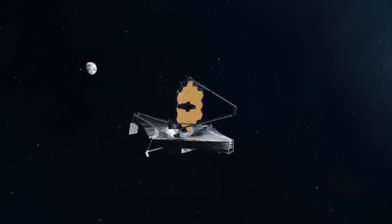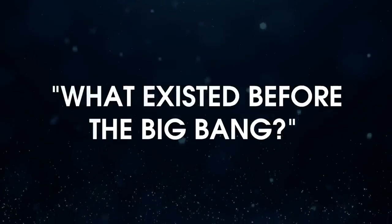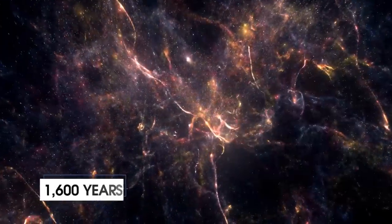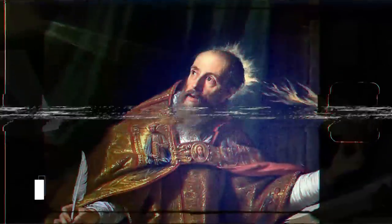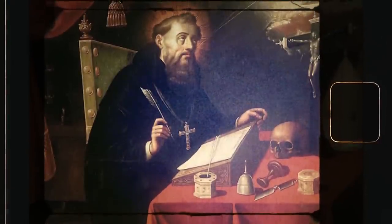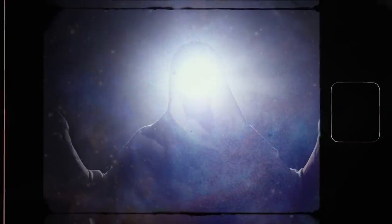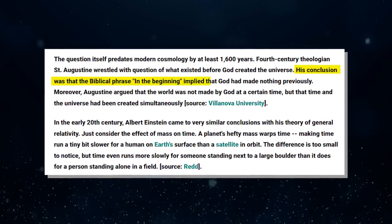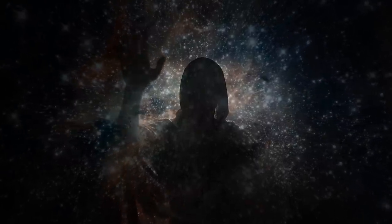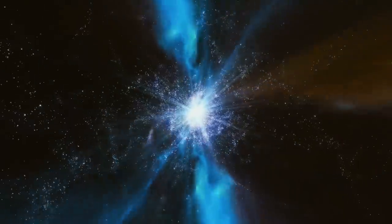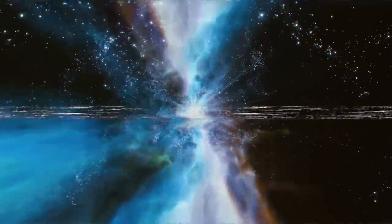The question what existed before the big bang itself predates modern cosmology by at least 1600 years. Fourth century theologian Saint Augustine wrestled with the question of what existed before God created the universe. His conclusion was that the biblical phrase 'in the beginning' implied that God had made nothing previously. Moreover, Augustine argued that the world was not made by God at a certain time, but that time and the universe had been created simultaneously.